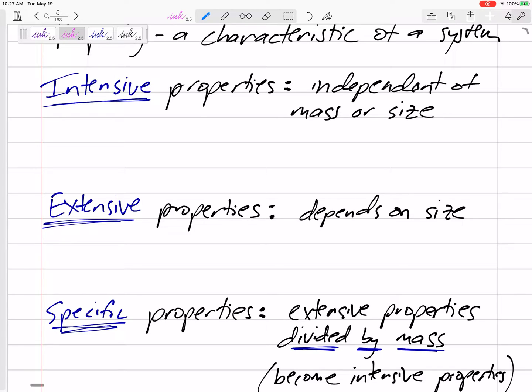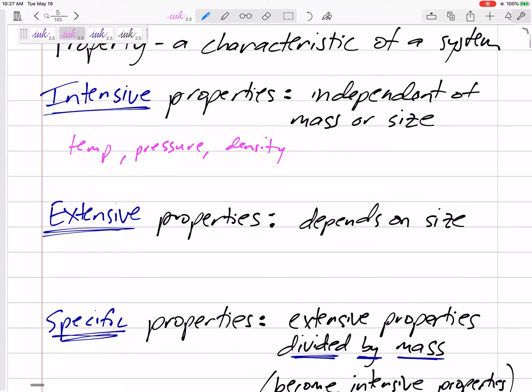Intensive properties are not dependent on the mass or the size. So it doesn't matter if you have a little bit of it or a lot of it. The temperature of this section of my system and the whole thing - the temperature is an intensive property. The pressure, the density, any properties that are independent of mass or size are intensive properties.